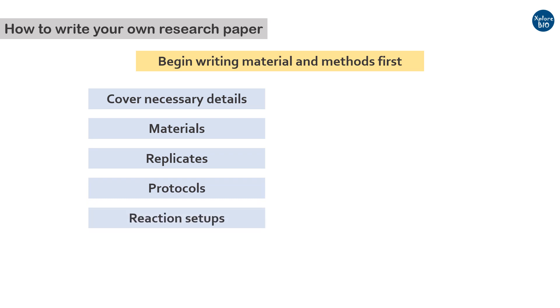As you already know the material involved, the methods you followed and the techniques or approaches you used. So, I recommend you to first start with materials and methods, describing them in appropriate details. Mention details about the materials used, replicates taken, protocols followed, reaction setups, statistical and computational analysis. If any modifications were done in the existing protocols or the methods, the same should also be mentioned here, so that the others can reproduce the experiments you have done.